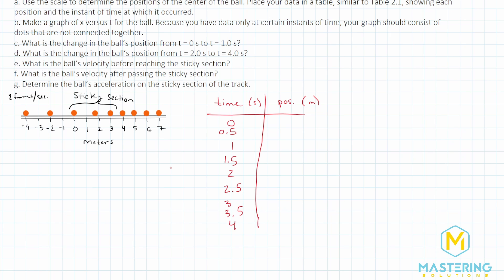At time zero, the ball is at negative four meters. At half of a second, it's at negative two. At one second, it's at zero. I'm using the same numbers as the book, so they may seem a little random, but I want to stay consistent. For one and a half seconds, we have 1.8 meters; at two seconds, three meters; two and a half seconds, four meters; three seconds, five meters; three and a half seconds, six meters; and seven meters at four seconds.